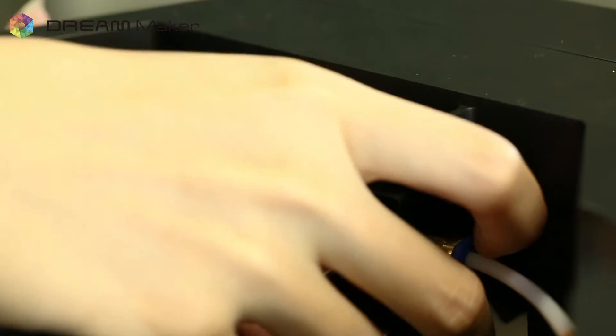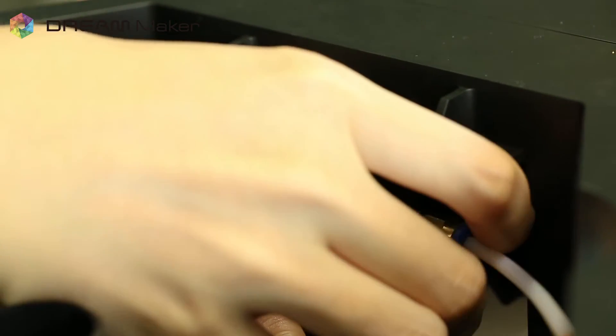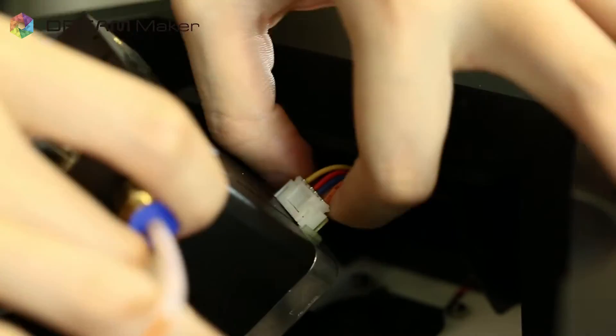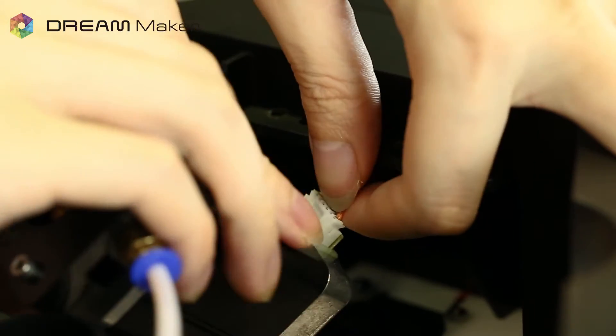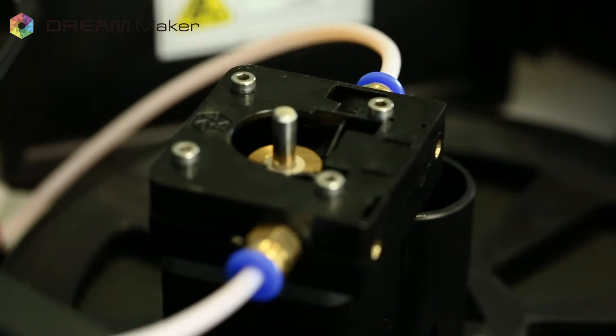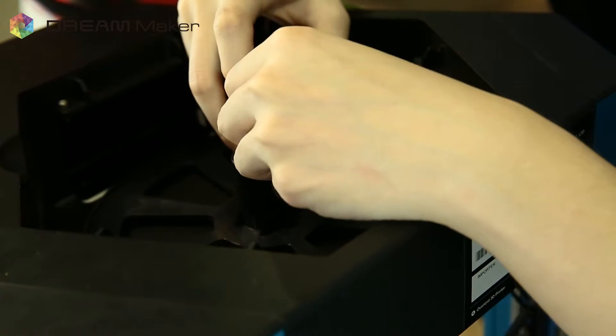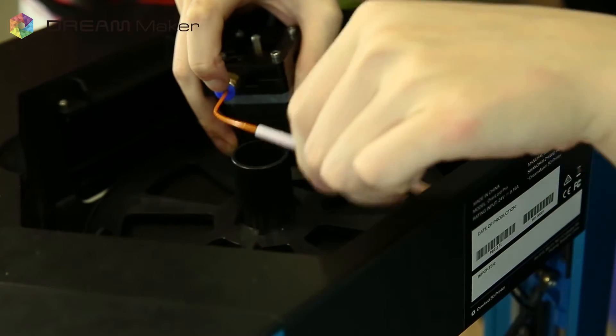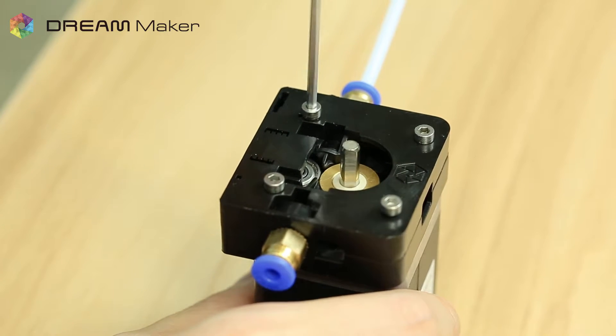Then gently remove the extruder with the stepper motor and detach the ribbon cable. Press and hold the blue top of the connector and remove the tube from the extruder. And then remove the four screws at the corner of the extruder.